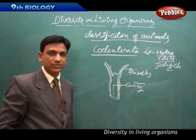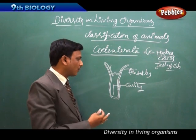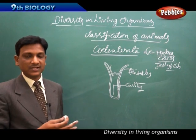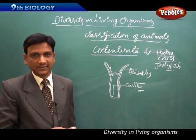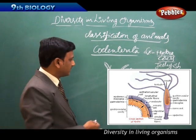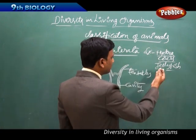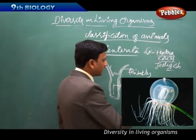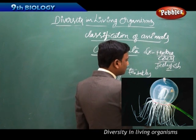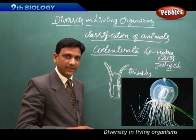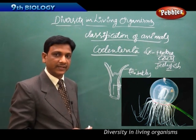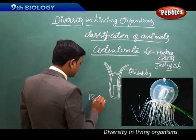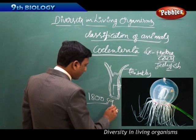Coelenterata animals like hydra have tentacles for movement and locomotion. Corals are fixed and live in colonies — even though each coral is very tiny, together they can form colonies as large as eighteen hundred square kilometers.